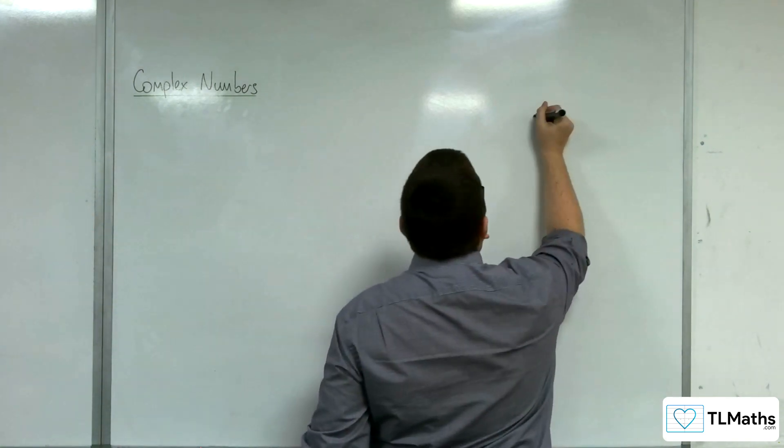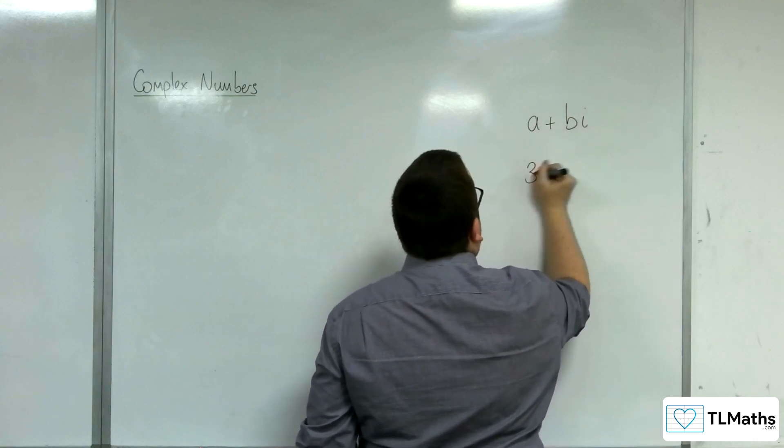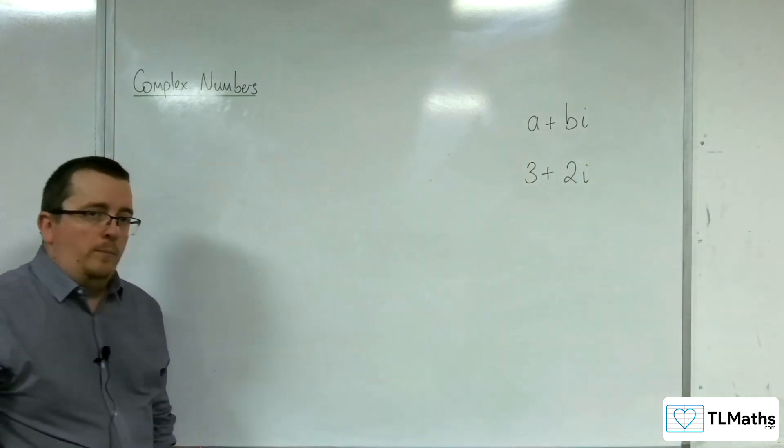Some people will write them down as a plus bi, and so for an example, that would be 3 plus 2i, for example. That is a complex number.